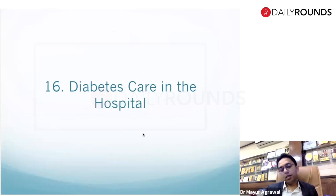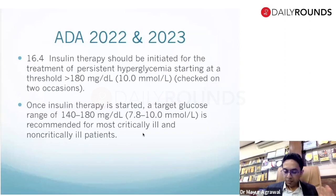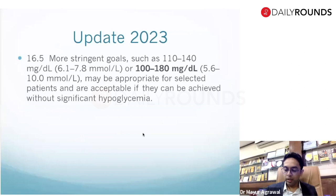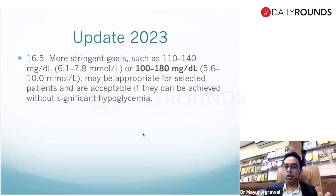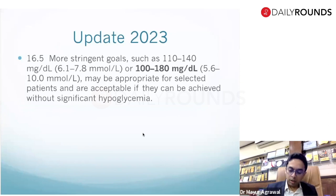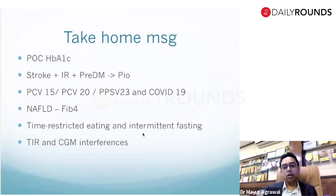The last section — diabetes care in the hospital. The target remains the same: initiate insulin if glucose exceeds 180 mg/dL in critically ill patients, with a target of 140–180 mg/dL. For more stringent criteria, without hypoglycemia the new 2023 target range has been changed from 110–140 mg/dL (2022 guideline) to 100–180 mg/dL, allowing further reduction in glucose levels if safely achievable.